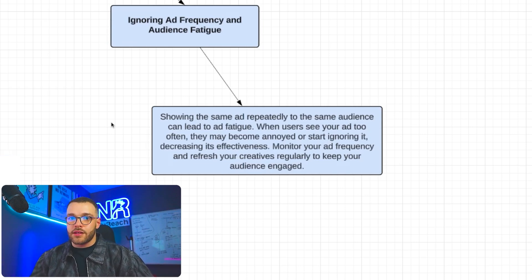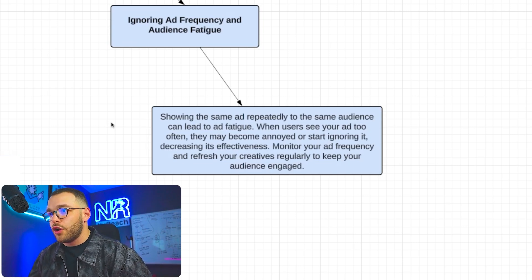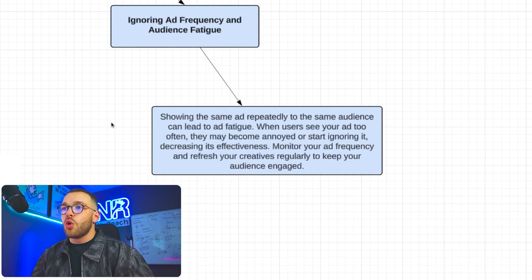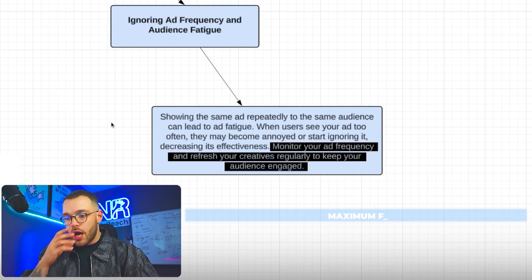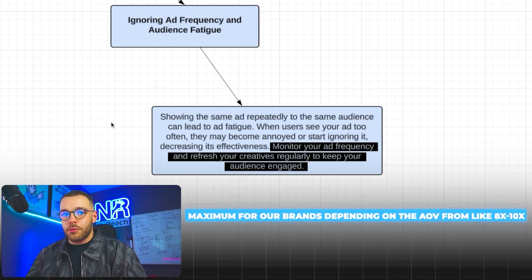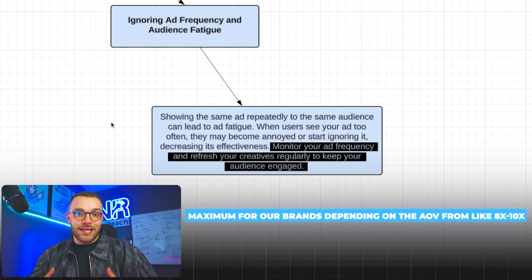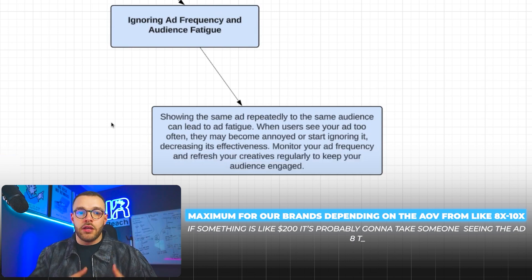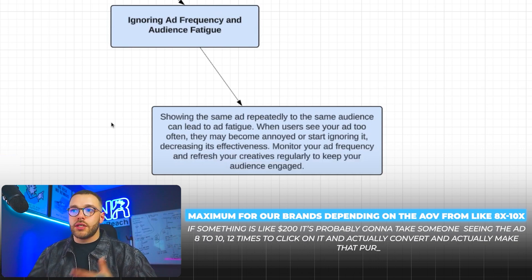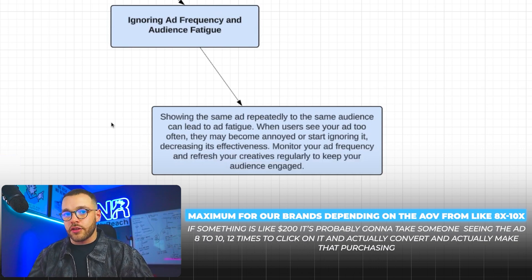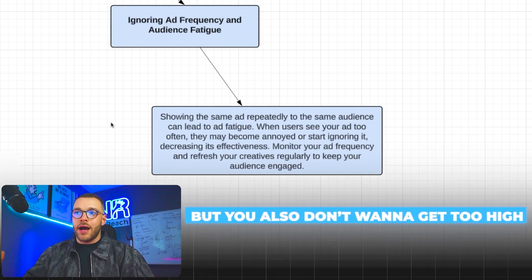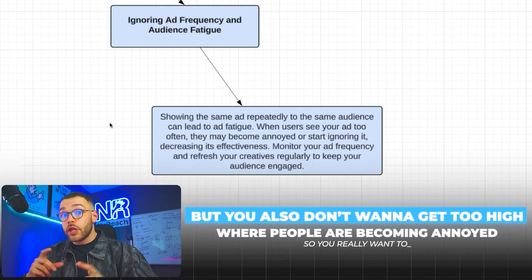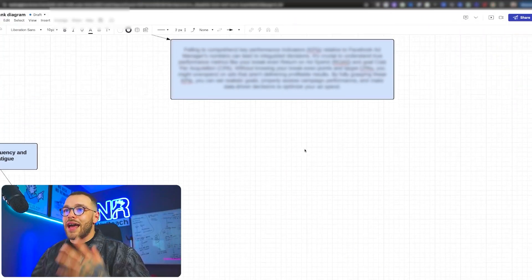When users see your ad way too often, they're going to get annoyed, hit 'hide this ad,' which reduces your ad rating on Facebook and hurts overall account performance. Keep an eye on frequency — for our brands, depending on average order value, a maximum of around 8 to 10x is probably right. If a product is around $200, it may take someone seeing the ad 8 to 12 times to convert, but you don't want to get so high that people become annoyed.